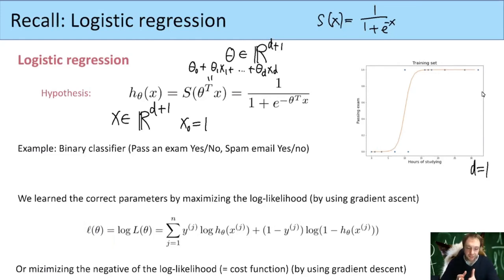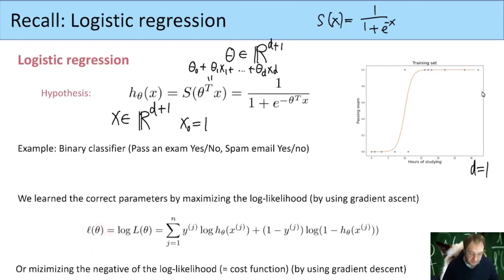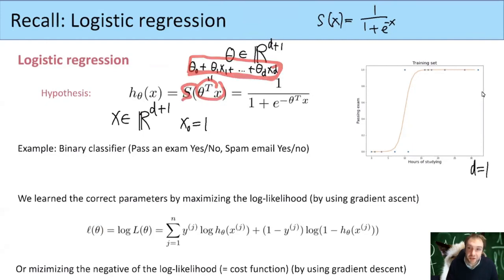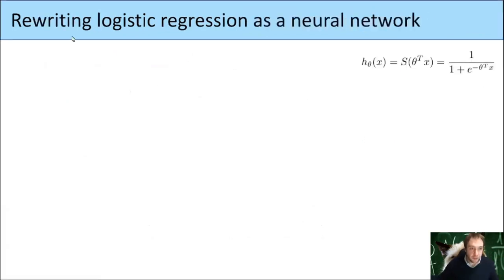The basic idea was that we calculated the gradient of the log likelihood — the cost or loss function — and then moved in the direction of the gradient to maximize the value for theta. All the ingredients we need for neural networks are contained here: we have a linear part — just multiplying two vectors — and we plug this linear part into a nonlinear function. Let me now rewrite this using slightly different notation.